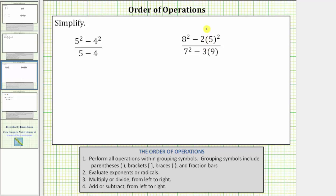Looking at the order of operations below, step one is to perform all operations within grouping symbols. Grouping symbols include parentheses, brackets, braces, and fraction bars, which means when simplifying an expression in fraction form, we simplify the expression as if there are parentheses or grouping symbols around the numerator and denominator.